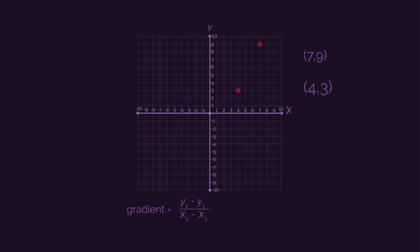Choose one of the sets of coordinates to be the ones, and the other coordinates to be the twos. I'm going to make the 4,3 my ones, and the 7,9 my twos.